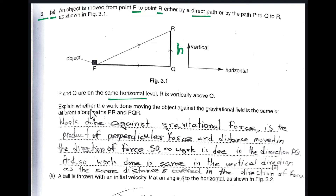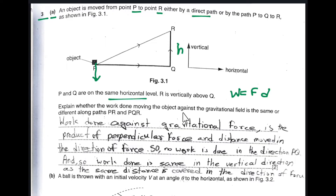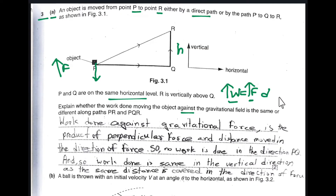We need to explain whether the work done in moving the object against the gravitational force is the same for both paths. Work done equals force times distance. Since gravitational force acts downwards, the force against gravity must act vertically upward. Work done is the product of force and the distance moved in the direction of the force.